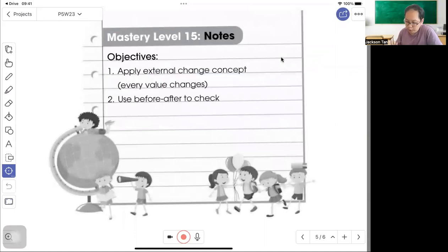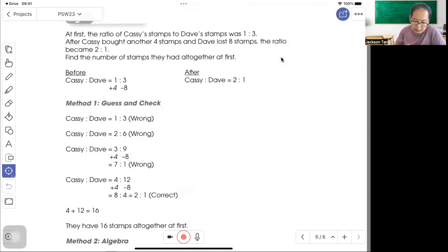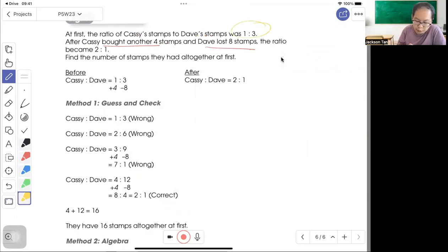After two, check. The ratio of Casey to Dave was 1 to 3. Casey bought 4. Dave plus A will become 2 to 1. So from 1 to 3 to 2 to 1.